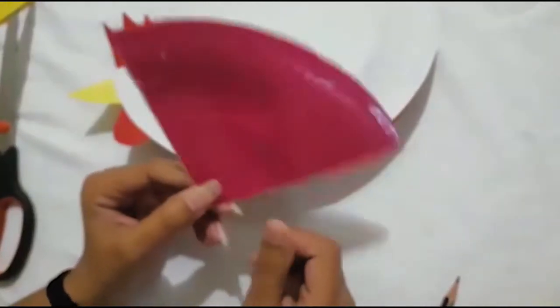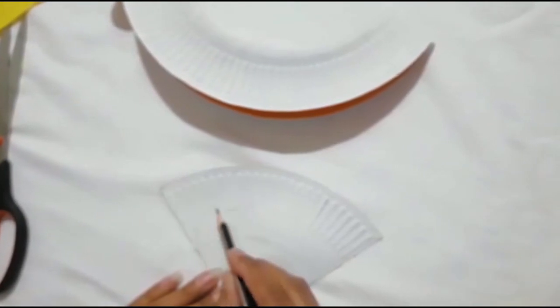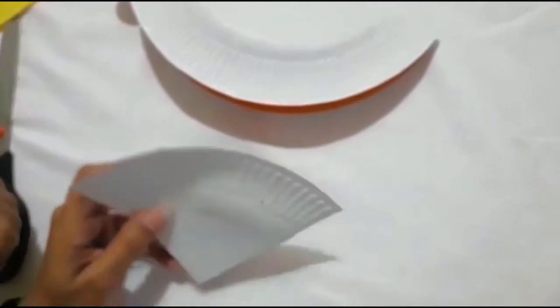Now pick up the quarter piece of the paper plate. With the help of a pencil, draw a bubbly shape. Take a pair of scissors again and cut it out in the similar way.